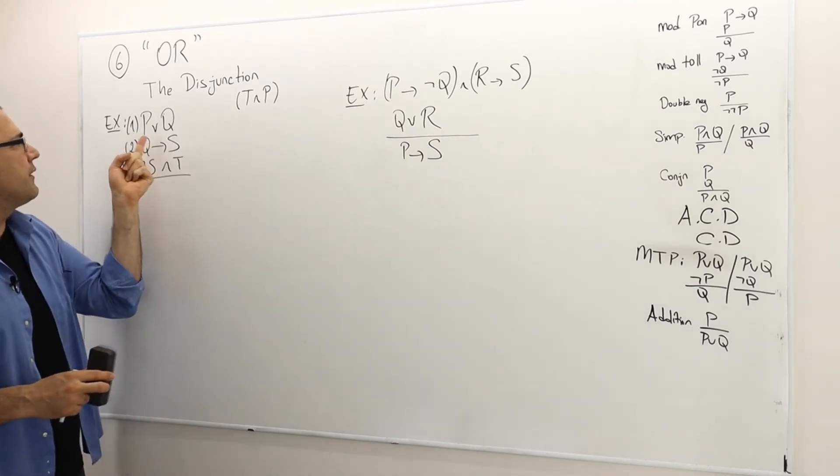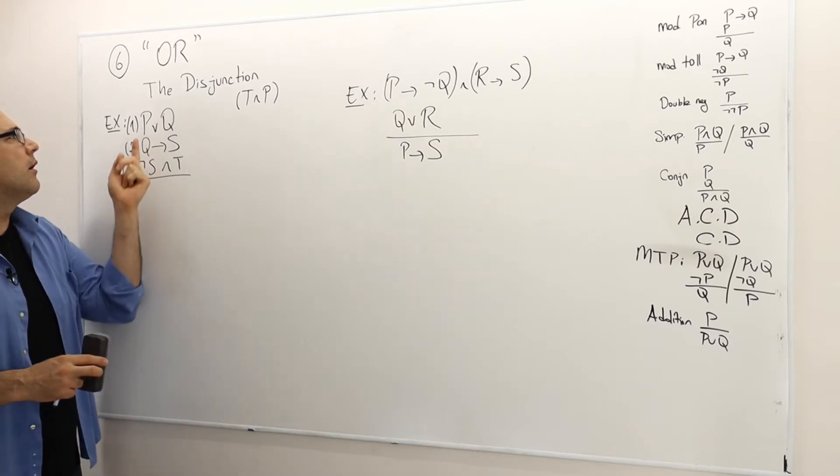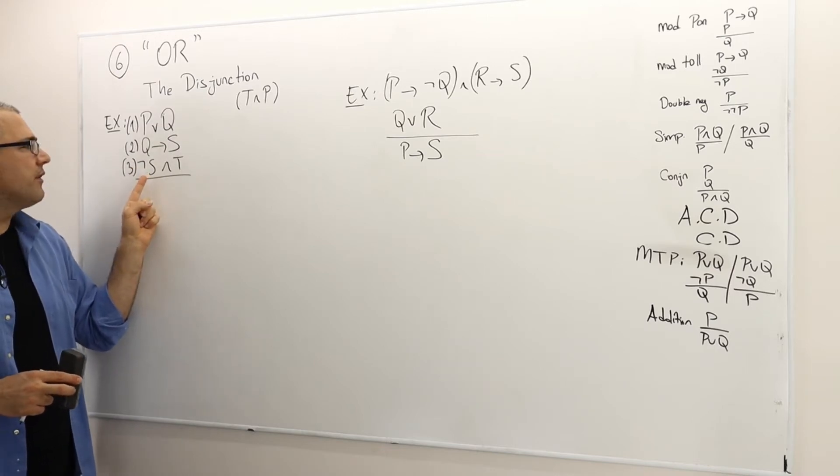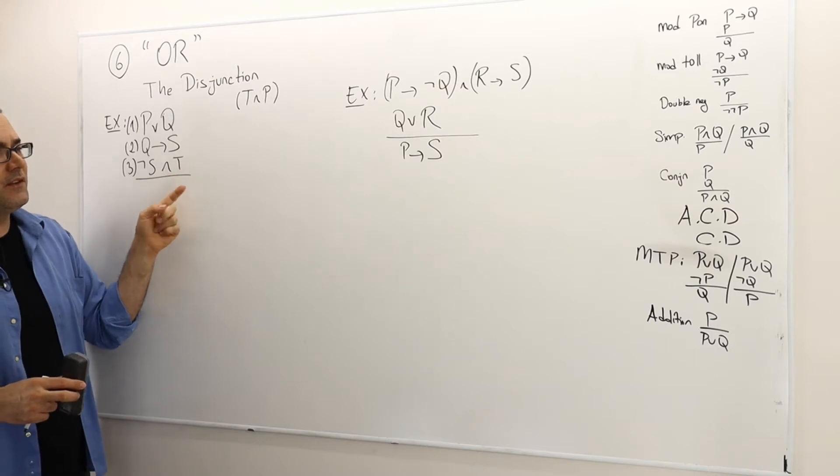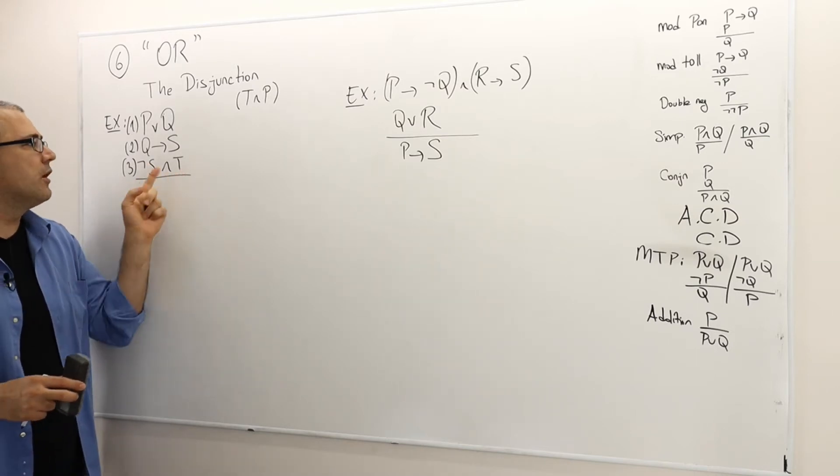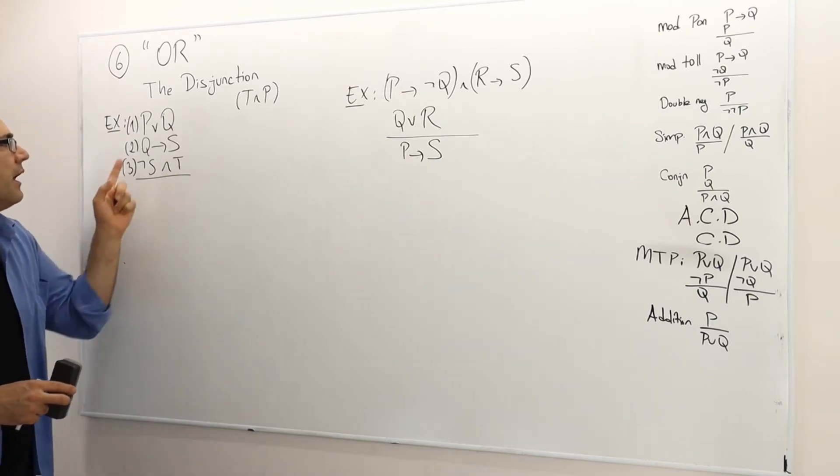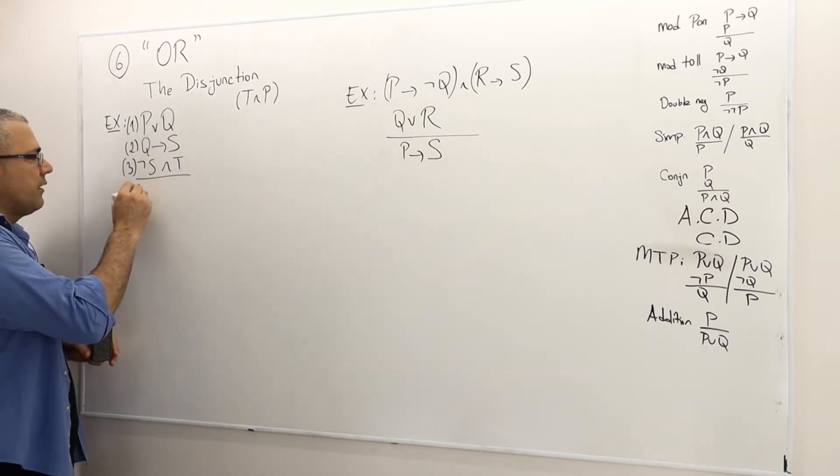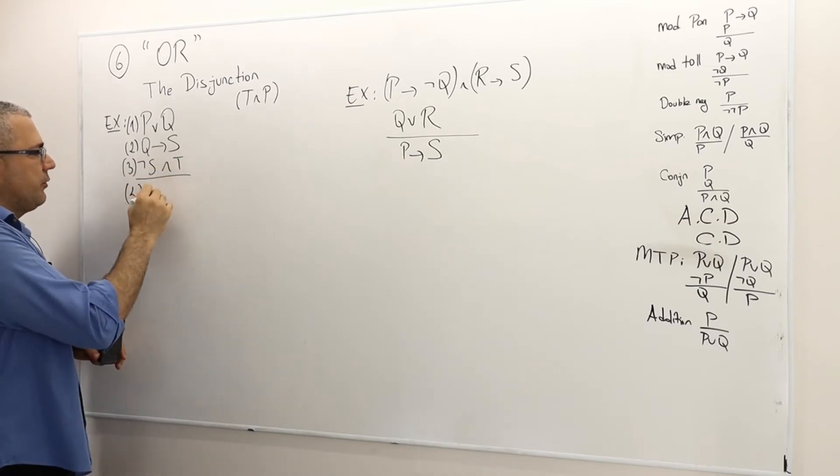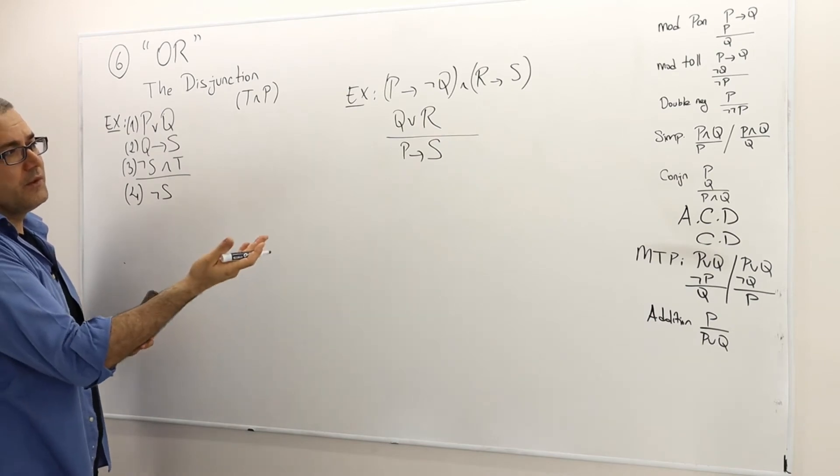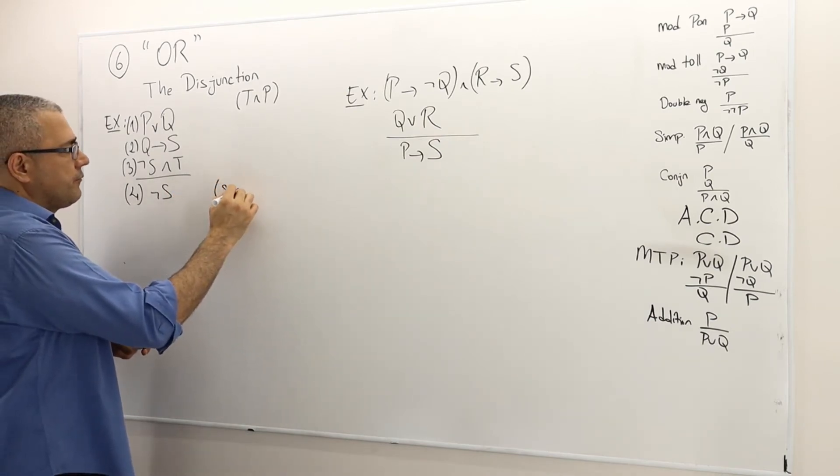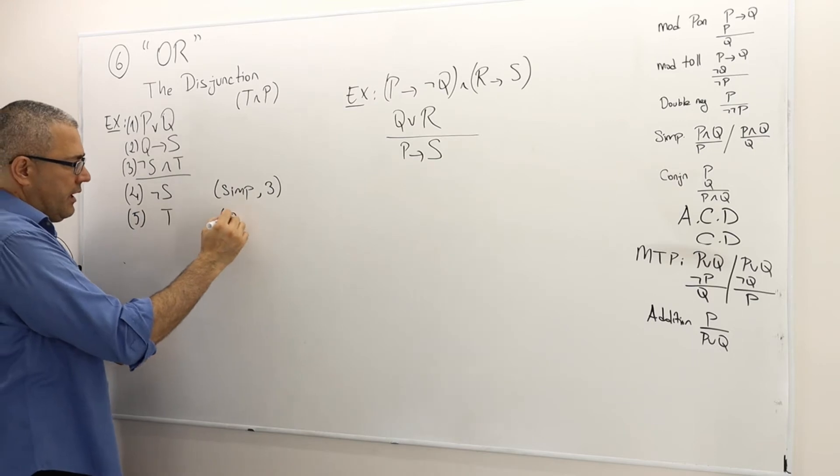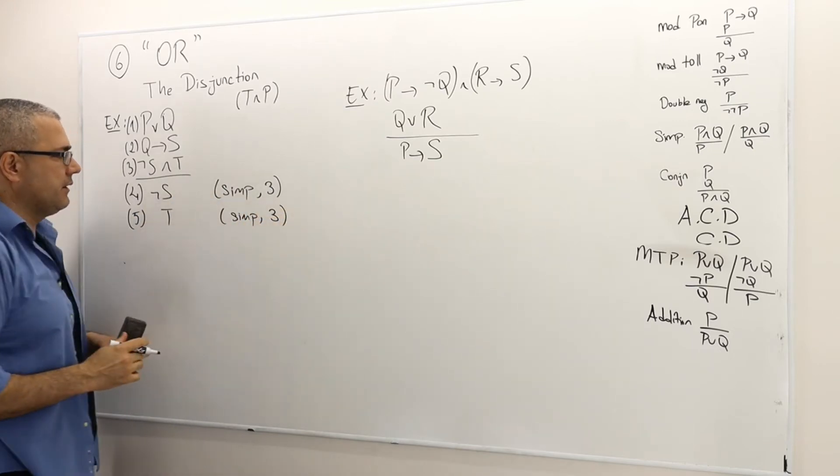When I look at the first premise P or Q I cannot deduct anything by simply using this statement. However I can deduct something from not S and T because this is conjunction. That means if this is true, not S must be true, T must also be true. And similarly from Q implies S I cannot deduct anything from itself. So let's start with using this statement in three. Because this is true not S must be true. This is basically simplification, a rule of line three. And similarly T is also true. Again this is simplification of the statement in line three.